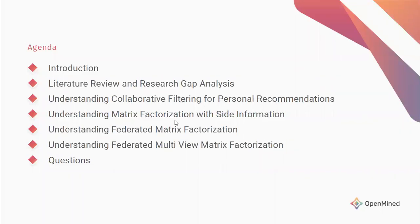What I have done is broken down the background into four parts. First we will understand what collaborative filtering is. Just to build some context I will spend some time there. We will then go from there with whatever is the meaning of side information. Metrics factorization with side information is something one of the co-authors of the same paper has written. From there we will go to federated matrix factorization, which is a paper written by one of the co-authors of the main paper, and then we will understand the entire federated multi-view matrix factorization together.